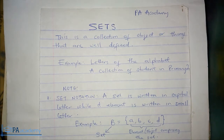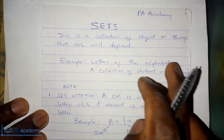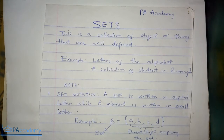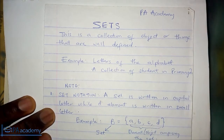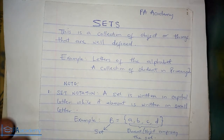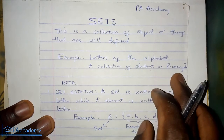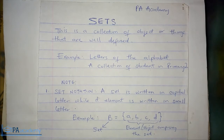So right here we are looking at sets. A set is a collection of objects or things that are well defined. An example is the letters of the alphabet — A, B, C to Z is an example of a set. Another example is a collection of students in primary two. Once you bring them together or you count them, they represent a set.